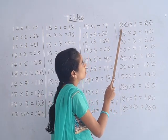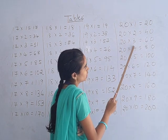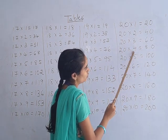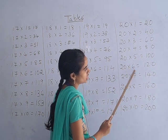So next, 20th table. 20 ones are 20, 20 twos are 40, 20 threes are 60, 20 fours are 80, 20 fives are 100, 20 sixes are 120.